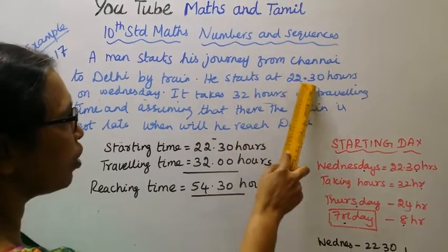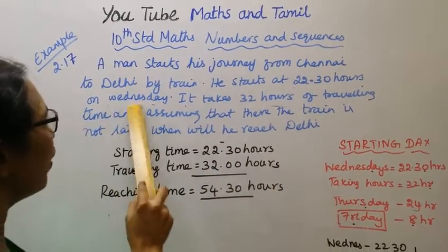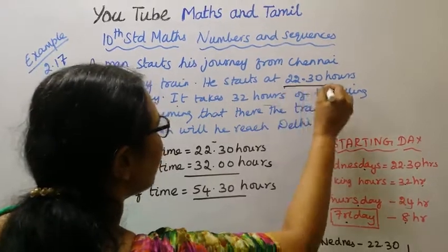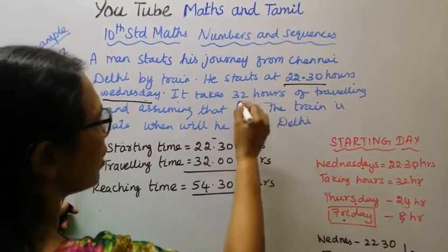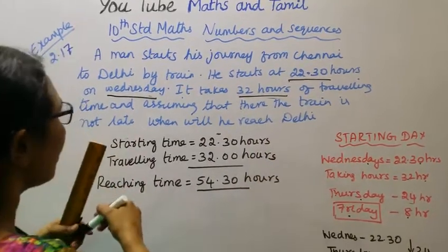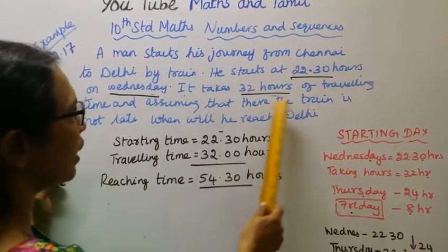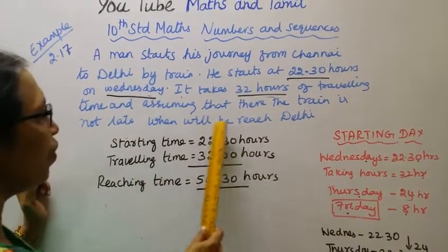He starts at 22.30 hours on Wednesday. He takes 32 hours of travelling time and assuming that the train is not late. When will he reach Delhi?